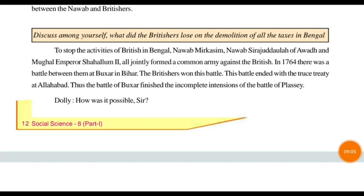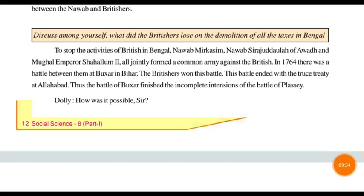In 1764 there was a battle between them called the Battle of Buxar in Bihar. The British won this battle again, as they had very advanced weapons and guns, along with other supporting armies. This battle ended with a truce treaty at Allahabad. The Battle of Buxar thus finished the incomplete intentions of the Battle of Plassey.